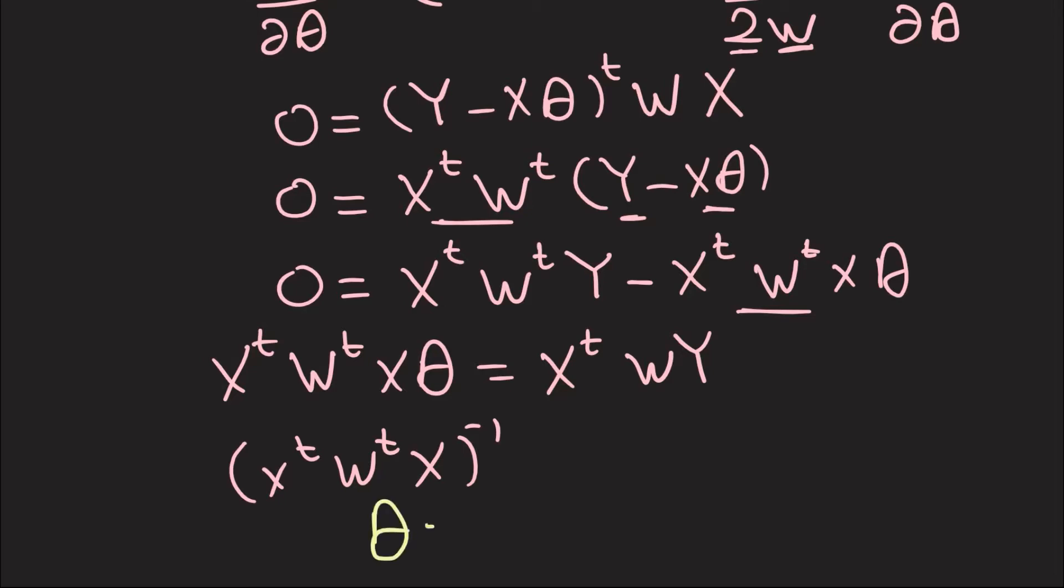Now, okay, w transpose is just like w, because w is a diagonal matrix, so we can forget about these. So we're going to have x transpose w x inverse multiplied by x transpose w y. And this is going to be our solution to weighted least squares.